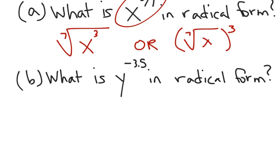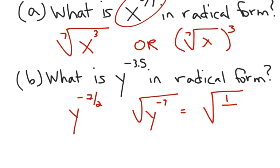Part B, what is y to the negative 3.5 in radical form? Well, notice that when we talk about rational exponents, we're talking about fractions. So, we want to rewrite negative 3.5 as a fraction. Well, it turns out that it's negative 7 halves. So, this is going to be the same thing as the square root of y to the negative 7th. We don't like negative exponents, so remember that we can write this as 1 over y to the 7th.